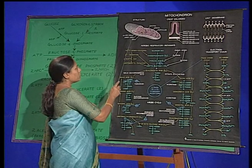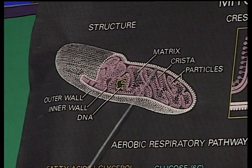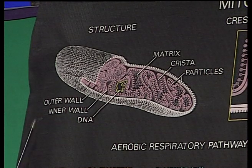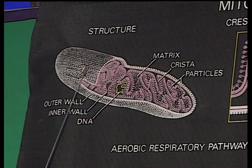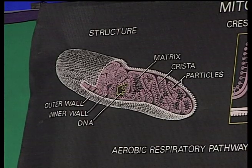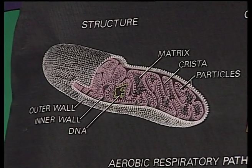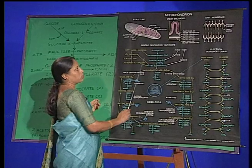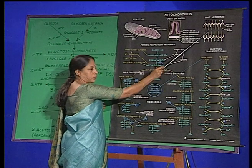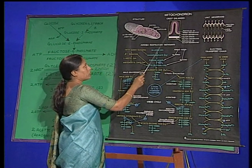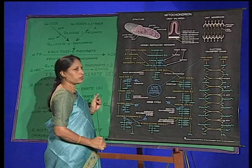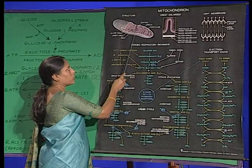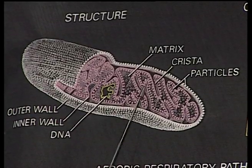The outer membrane is a continuous membrane that covers the entire organelle. The structure of this outer membrane resembles that of the plasma membrane or endoplasmic reticulum — it consists of a protein layer and a lipid layer, and is 6 Angstroms in thickness. The presence of this outer membrane separates the mitochondria from the cytosol.